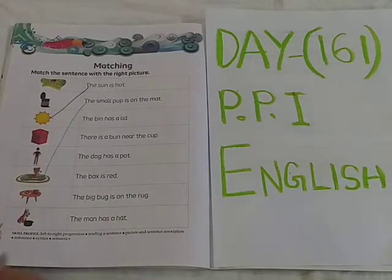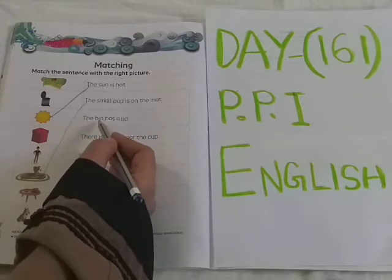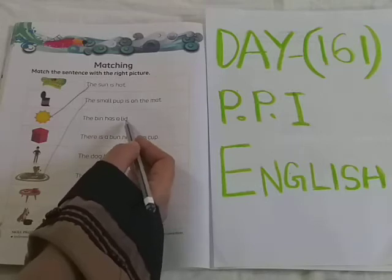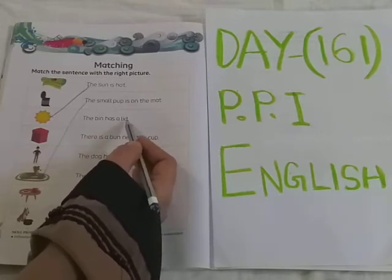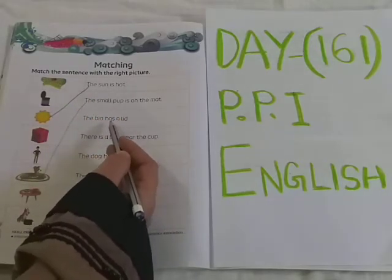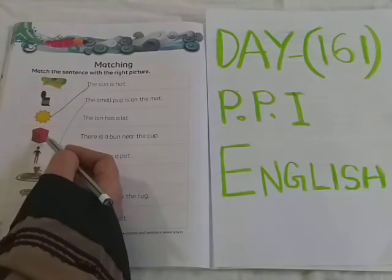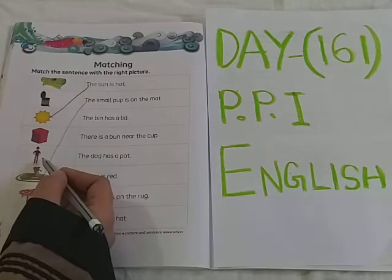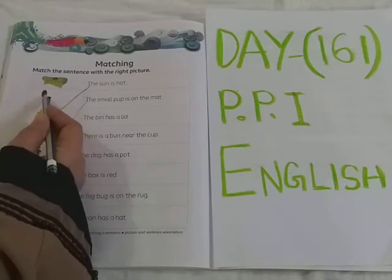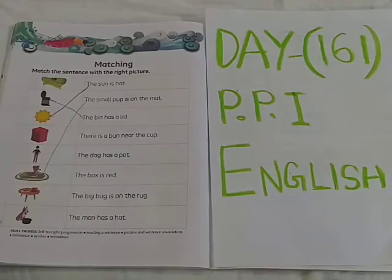See the next sentence now. T-H-E — The. B-I-N — Bin. H-A-S — Has. A. L-I-D — Lid. The bin has a lid. Where is the bin? What the sentence is saying is the bin has a lid. So where is the bin which is with the lid? Let's see. Is this a bin? No, this is a red color box. Is this a bin? No. Is this a bin? Yes, this is a bin with the lid. The bin has a lid. So match it.